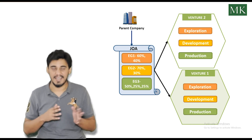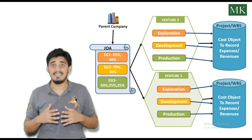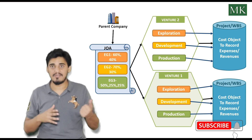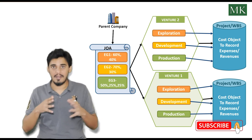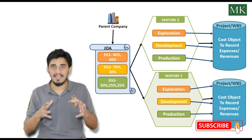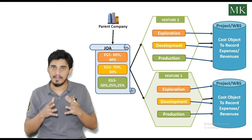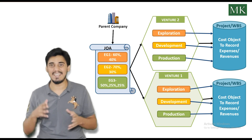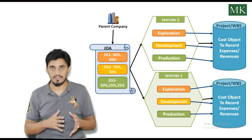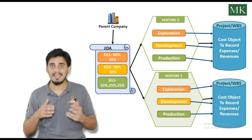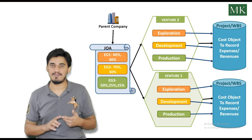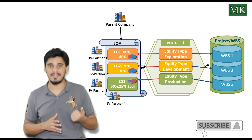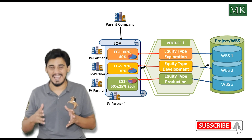The concession joint venture and the equity type are both mapped with a cost object like a WBS element or cost center, which is used to record all the expenses and revenues related to the joint venture and equity type. Since the joint venture master data is already mapped with the joint operating agreement master data, the system can derive all relevant partner and equity information automatically.